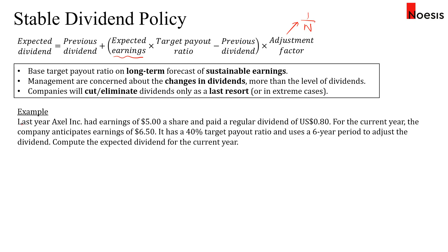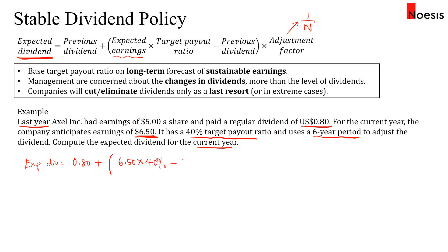Take this example: last year, Axel Incorporated had earnings of $5 a share and paid a regular dividend of $0.80 — this is the previous dividend. For the current year, the company anticipates earnings of $6.50 — the expected earnings. They have a target payout ratio of 40% and use a six-year period to adjust the dividend. The expected dividend equals the previous dividend of $0.80, plus ($6.50 times 40% minus $0.80) multiplied by the adjustment factor of 1/6. This gives $0.80 plus $0.30, arriving at an expected dividend of $1.10.